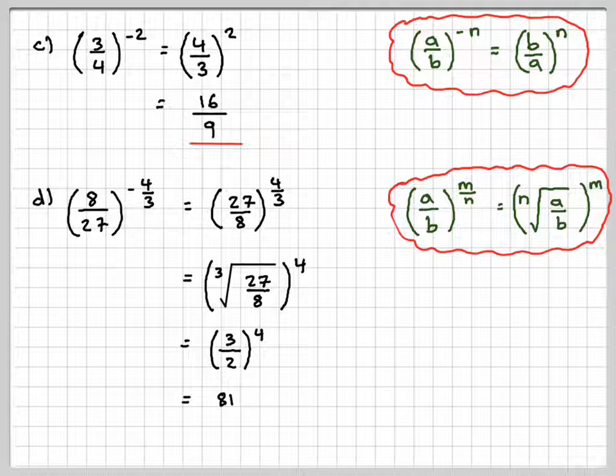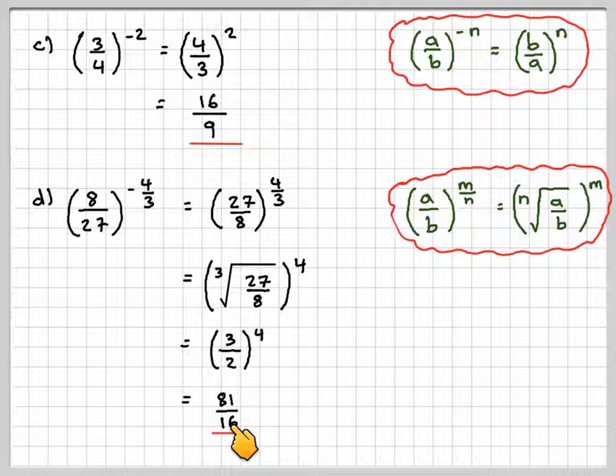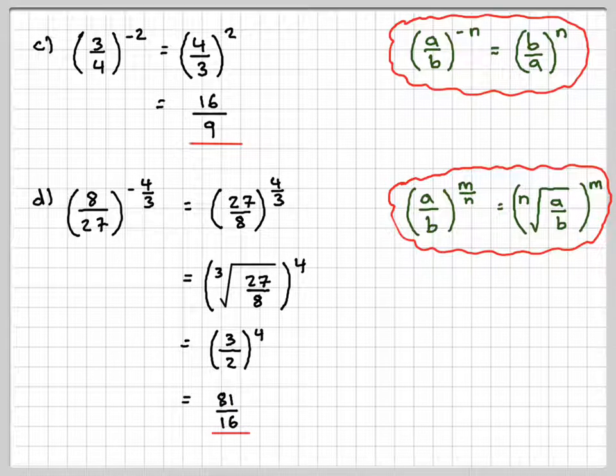And then 2 to the power of 4 is going to be 2 times 2, which is 4, times 2, which is 8, times 2 again, which is 16. So the final answer of 81 over 16. Again, it's okay to leave it as an improper fraction.